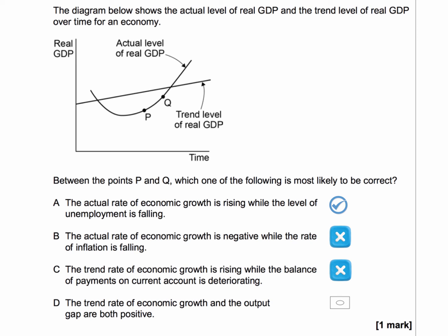C is wrong. Option D: the trend rate of growth and the output gap are both positive. We can discount D because P and Q are points where actual GDP lies below the trend level of GDP, which means the output gap is negative. The trend rate of growth is positive, but in this case P and Q are both situations where there is a negative output gap.